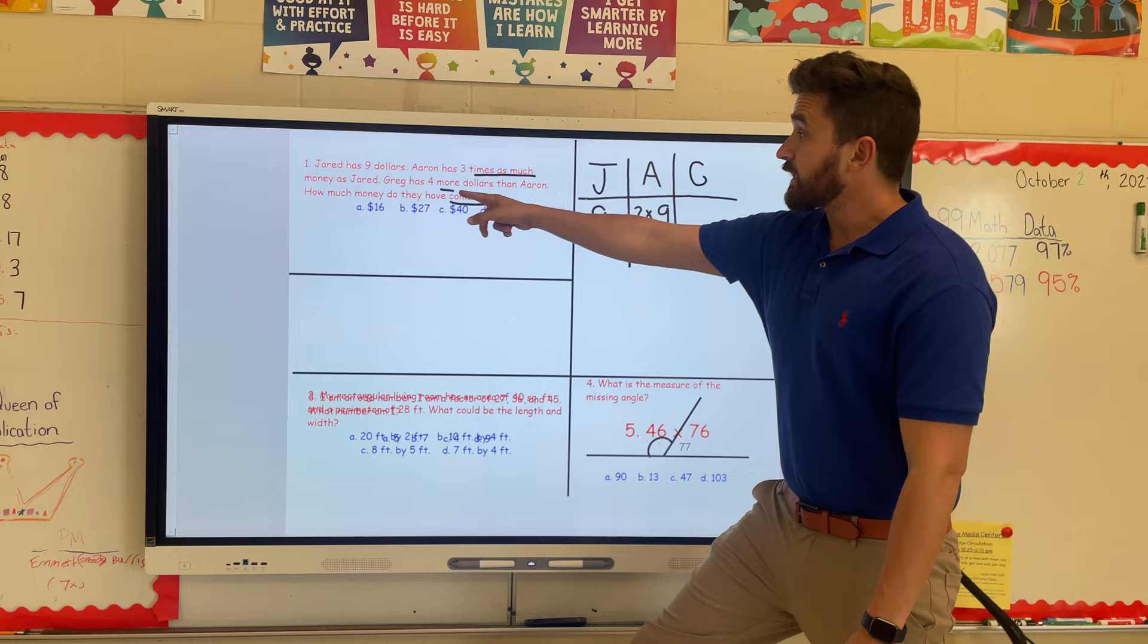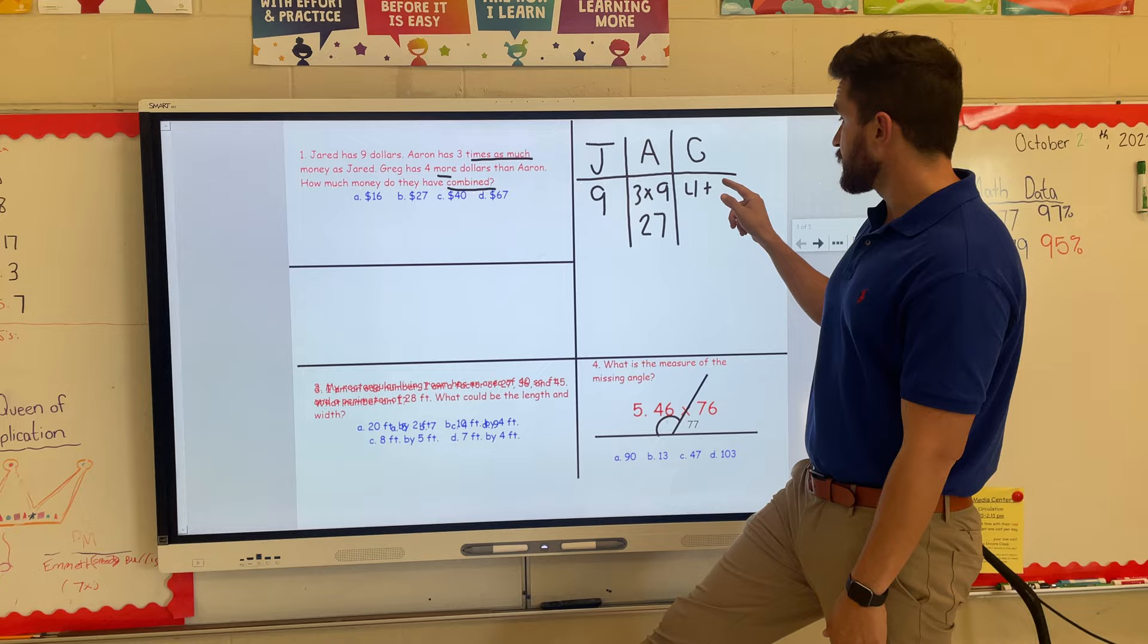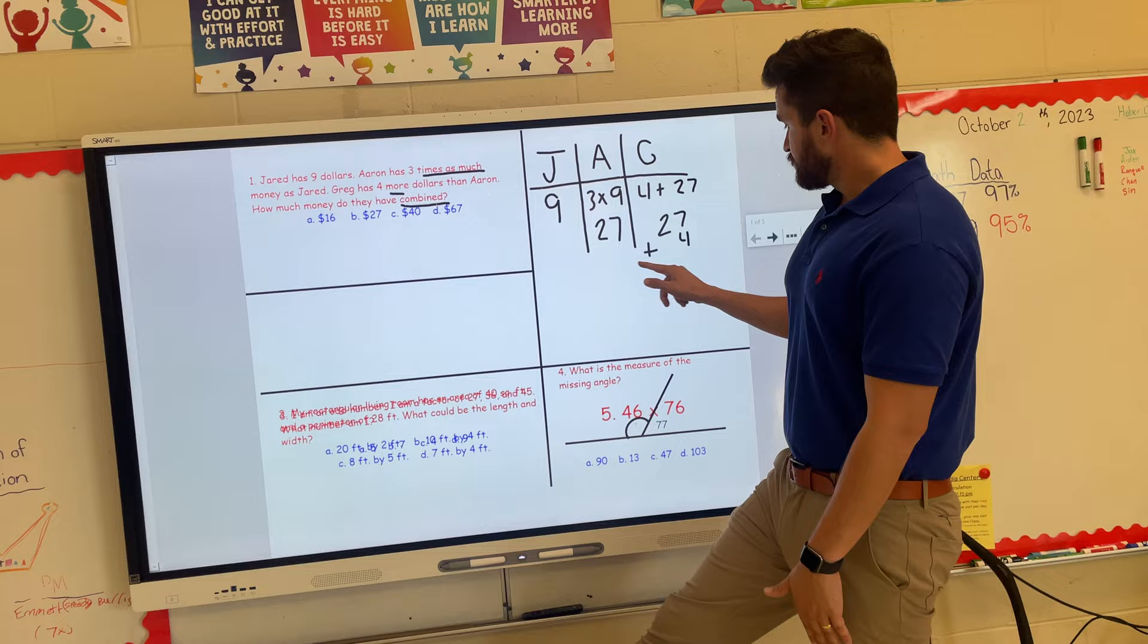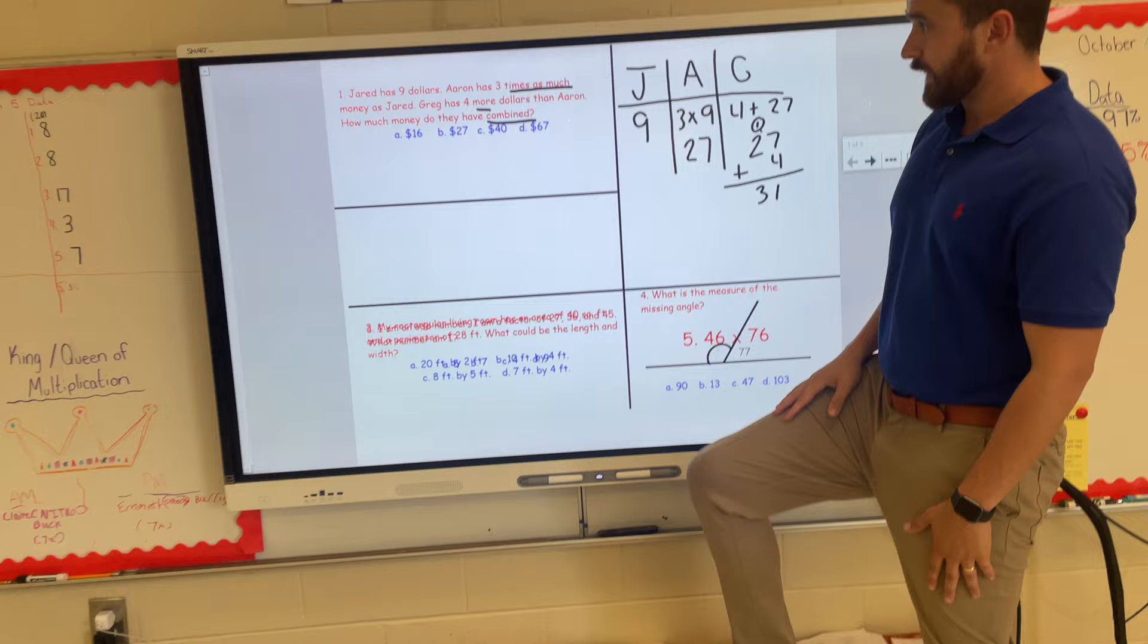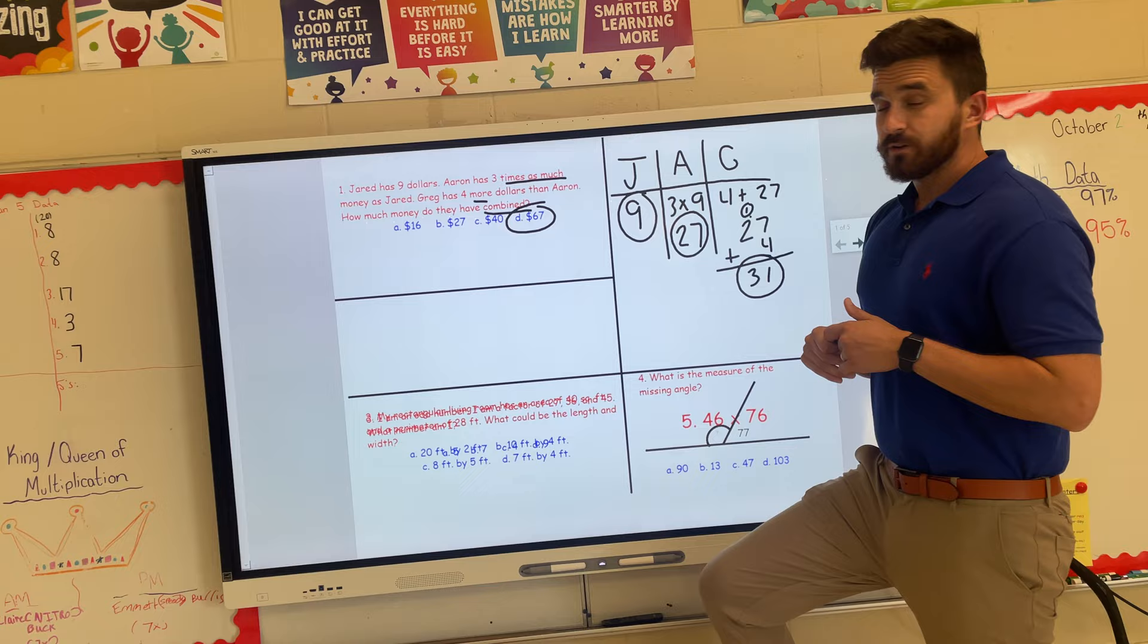Greg has four more dollars than Aaron. We've got our addition anchor chart over here. We know 'more' means we're going to do some addition. So four more, I would just do four more than Aaron, who we just figured out is 27. Then you can stack these up, add them together, and that would give you 31 for Greg. The last part—how much money do they have combined—that's the part where you can just take all three numbers and add them together, which would give you 67.